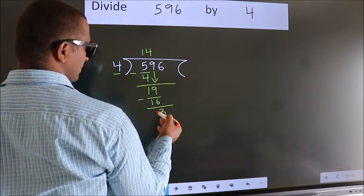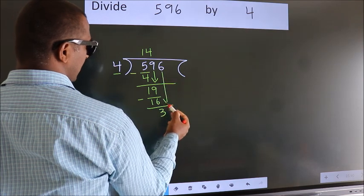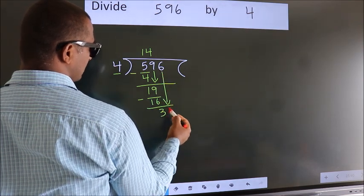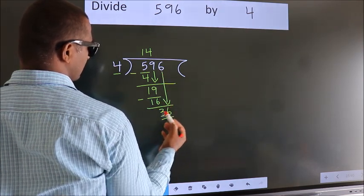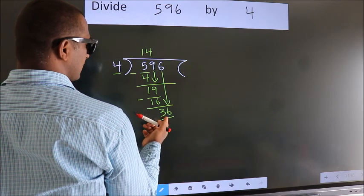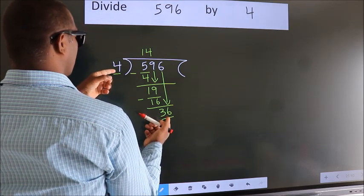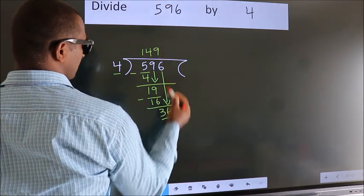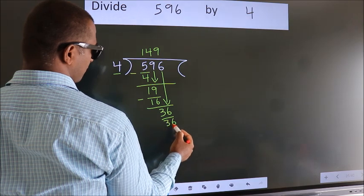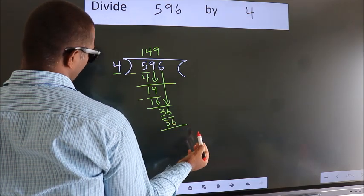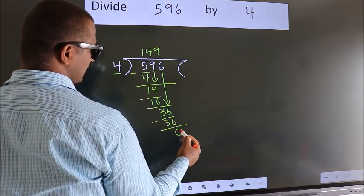After this, bring down the beside number. So, 6 comes down, making 36. When do we get 36 in the 4 times table? 4 nines are 36. Now we subtract. We get 0.